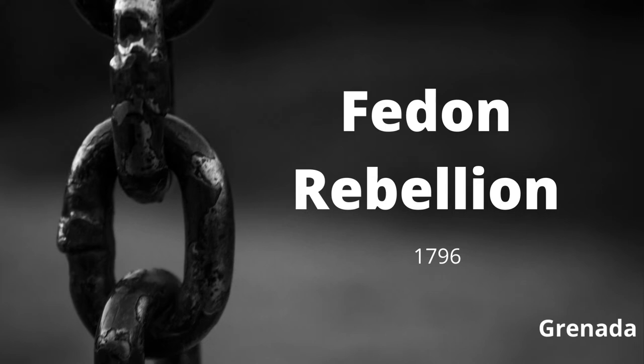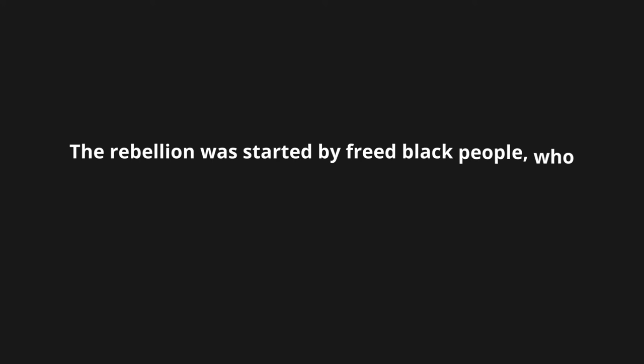Fédon's Rebellion took place in 1796 in Grenada. Julian Fédon was a wealthy mulatto man who owned the Belvedere estate. The rebellion was started by freed Black people who were inspired by the Haitian Revolution. One of the main reasons was the dissatisfaction with the treatment of Black people by the British. Fédon wanted to replace the British government with the French, as well as to increase the civil rights of the free coloreds. This rebellion lasted for over a year and was defeated by the British troops. Fédon was never captured.